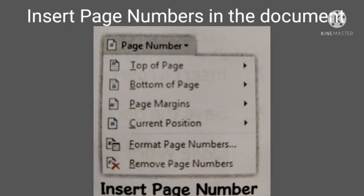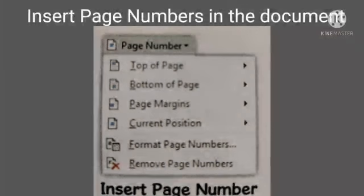To insert page numbers in the document: first, on the Insert tab, in the Header and Footer group, click on Page Number. Second, click on Top of Page to insert page numbers in the header area, or Bottom of Page to insert the page number in the footer area.